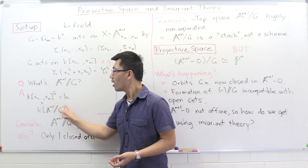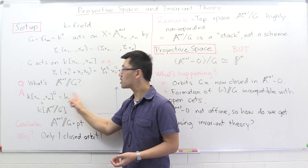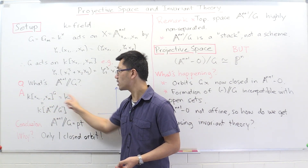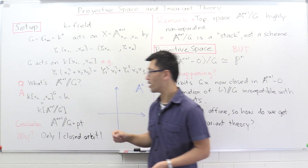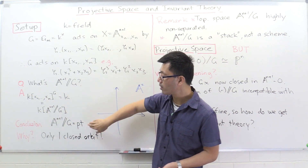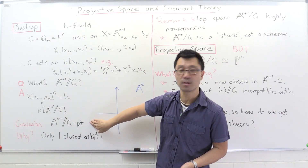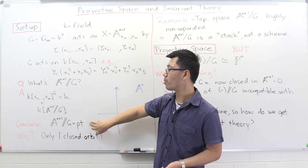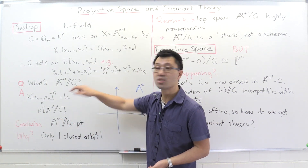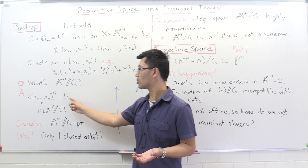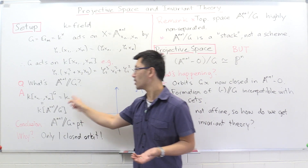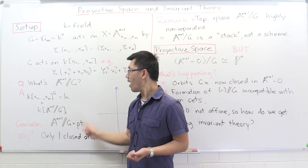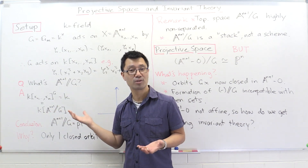Once we have the coordinate ring as just K, we can identify the corresponding affine variety. This is the coordinate ring of a single point — A^0 — which is the polynomial ring in zero variables. Functions on a point are exactly K.